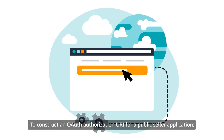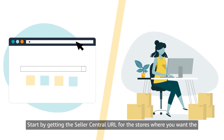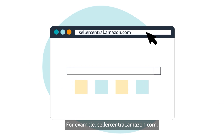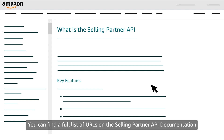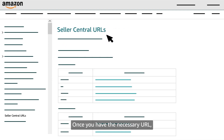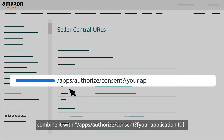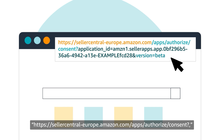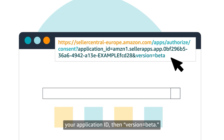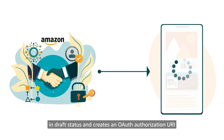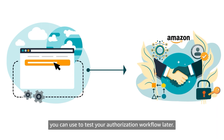To construct an OAuth Authorization URI for a public seller application, start by getting the Seller Central URL for the stores where you want the seller to authorize your application — for example, sellercentral.amazon.com. You can find a full list of URLs on the Selling Partner API documentation website by selecting Seller Central URLs from the table of contents. Combine it with /apps/authorize/consent, your application ID, then version=beta. Adding version=beta indicates the authorization workflow is for an application in draft status and creates an OAuth Authorization URI you can use to test your authorization workflow later.